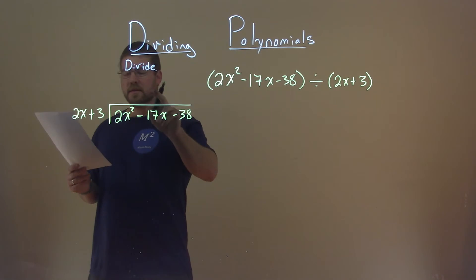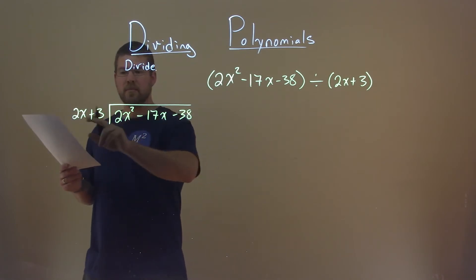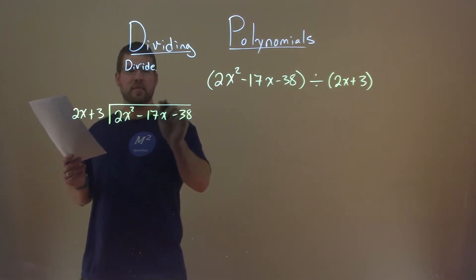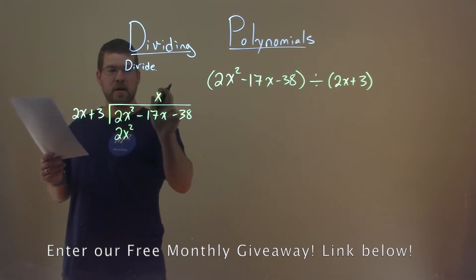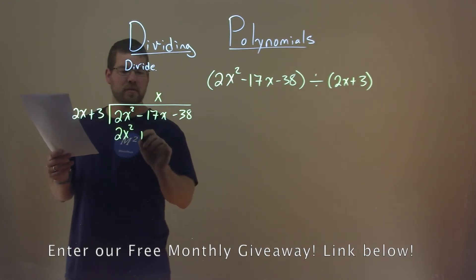Now, what times 2x gets me 2x squared, and that's just going to be an x. So I'm going to put the place value over the x value here. x times 2x is 2x squared. x times 3 is positive 3x.